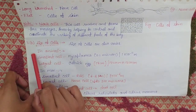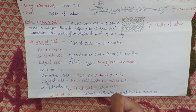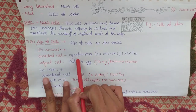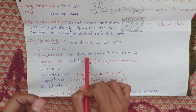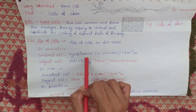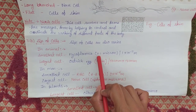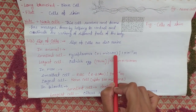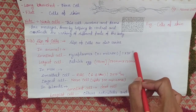First we will see about animals. Which animal has the smallest cell and which has the largest? The smallest cell belongs to mycoplasma, which is a bacteria. It is the smallest cell in the whole world among all discovered organisms. Its size is 0.1 micron, and in meters that is 1 × 10⁻¹¹ meters.